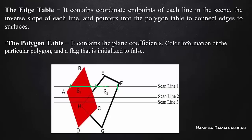Then Scanline 2: in this portion, we have the background intensity. The active edge list of S2 — Scanline 2 starts with AD, then EH, then BC, then FG. There is no flag on a certain portion, so we check the background intensity in the refresh buffer.